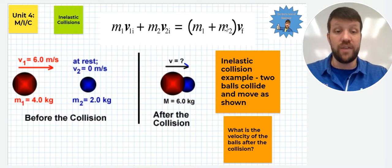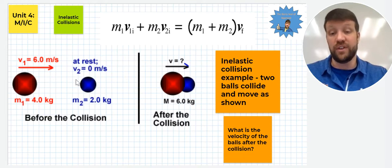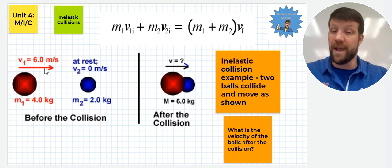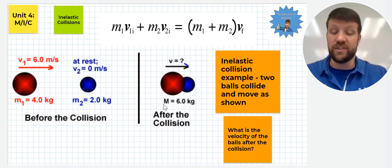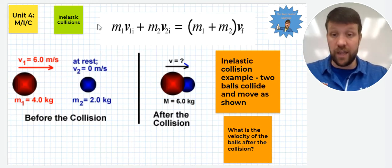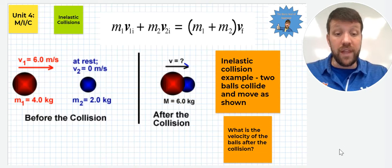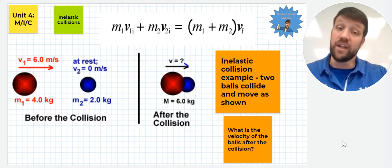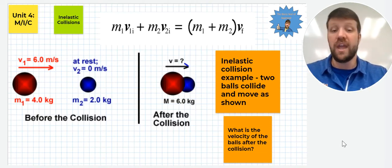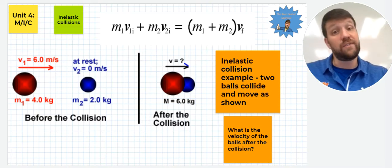We'll only be looking at this momentum before and then the momentum of both combined after the collision. We have a larger mass, 4 kilogram mass moving at 6 meters per second, hits a smaller one that's at rest. They stick, and thus we have an inelastic collision. The two balls collide and move as shown. We want to know the velocity of the balls after the collision here once they're combined. Pause briefly, and then we'll come back to this, and I'll give you the answer.